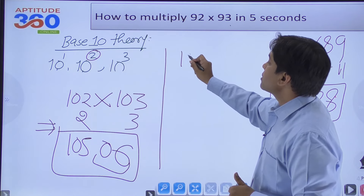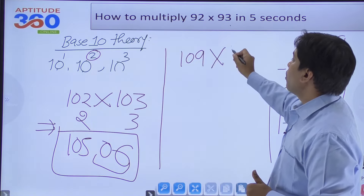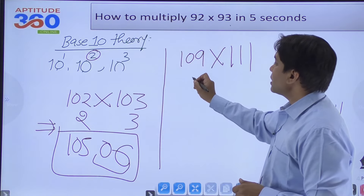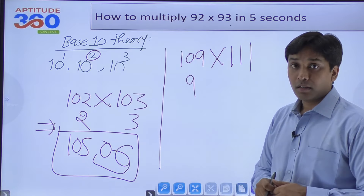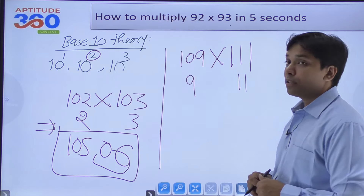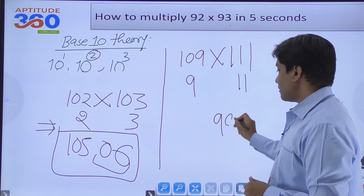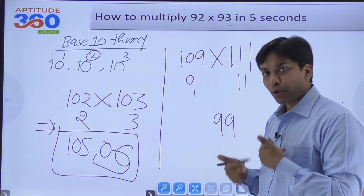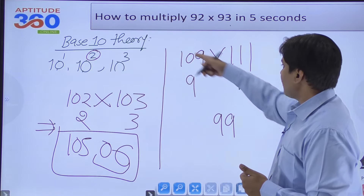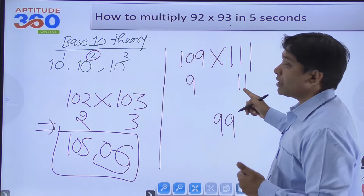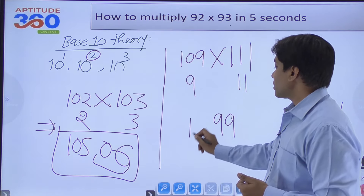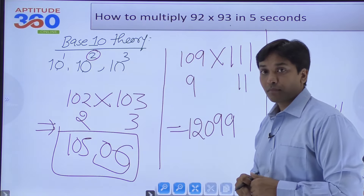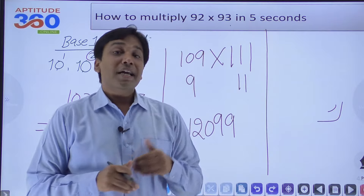For 109×111 with base 100: 109 is 9 more, 111 is 11 more. Multiply excesses: 9×11=99. Write both digits since base is 10². Cross addition: 109+11=120 or 111+9=120. Answer: 12099.